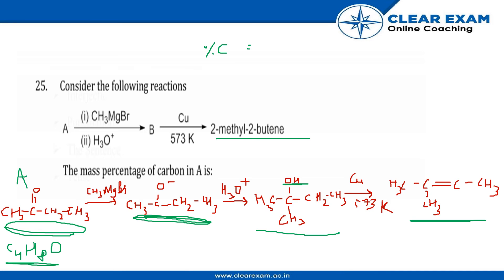Now let's calculate the mass percentage of C in A. So we have 4 carbons and the mass of 1 carbon is 12. The atomic weight of carbon is 12 divided by the weight of C4H8O. So that would be 4 into 12 plus 8 plus 16, into 100. So we will get 66.67%. Our final answer is 66.67%.